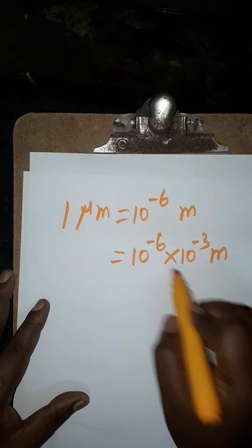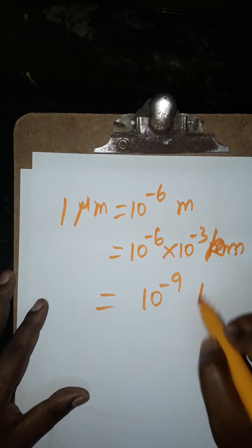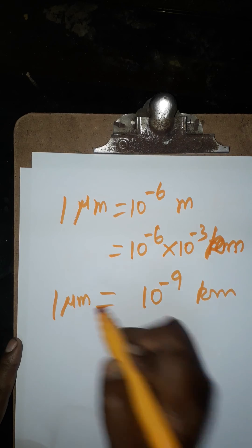Now I found how we can convert from meters to kilometers. We will get 10 power minus 9 kilometers equals 1 micrometer.